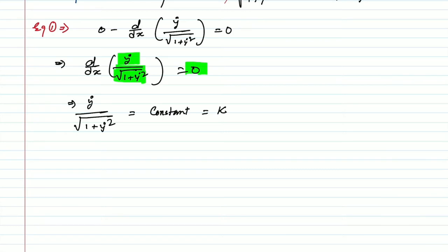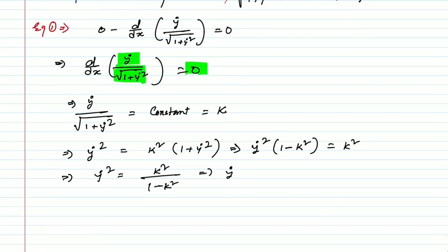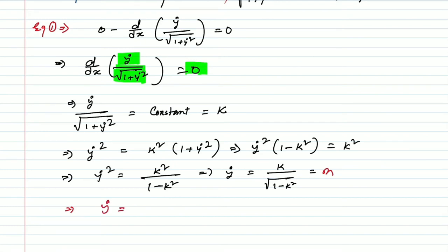If you solve or simplify this, you get: y_dot² = k²(1 + y_dot²). Simplifying further: y_dot²(1 − k²) = k², so y_dot² = k² / (1 − k²), and therefore y_dot = k / √(1 − k²). Since this is a constant, we can write it as m. This implies dy/dx = m, which gives dy = m dx.